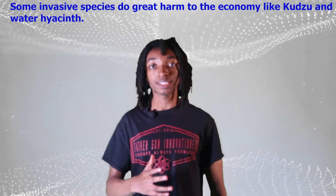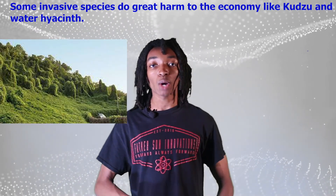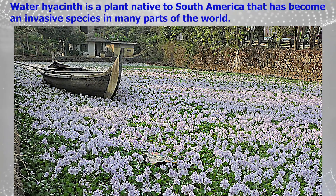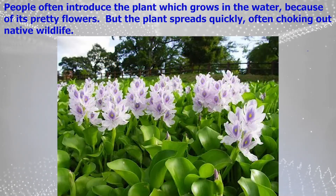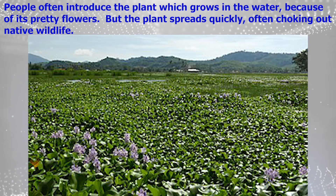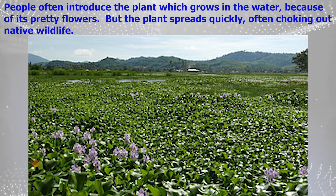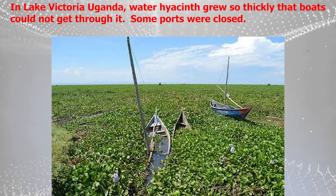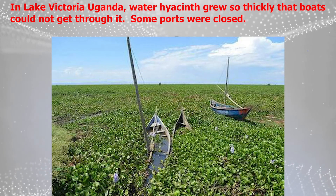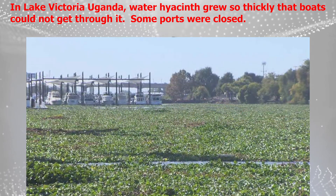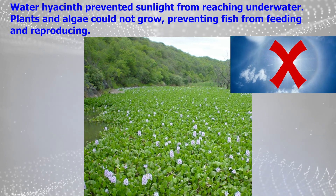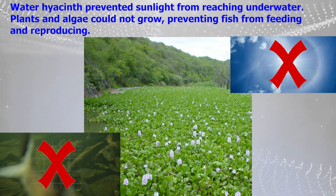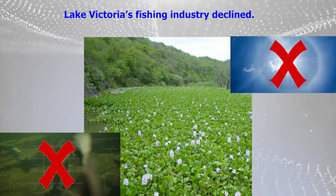Some invasive species do great harm to the economy, like water hyacinth. Water hyacinth is a plant native to South America that has become an invasive species in many parts of the world. People often introduce the plant, which grows in water, because of its pretty flowers. But the plant spreads quickly, often choking out native wildlife. In Lake Victoria, Uganda, water hyacinth grew so thickly that boats could not get through it and some ports were closed. Water hyacinth prevented sunlight from reaching underwater, so plants could not grow, preventing fish from feeding and reproducing, and Lake Victoria's fishing industry declined.